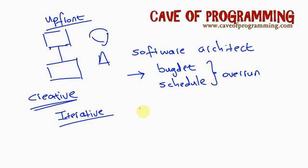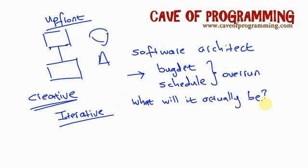Before you start writing software, you've got to plan certain things ahead. You've got to know what you're going to write — what will the software actually be? You can't just start writing without knowing that. You also have to decide on what technology you're going to use; it's really important to figure that out up front. And you've got to think about how the software is going to be deployed, because if you don't, you'll overrun your budget or your schedule.